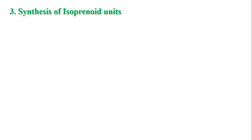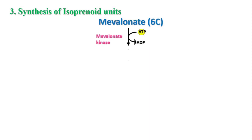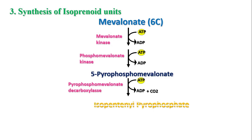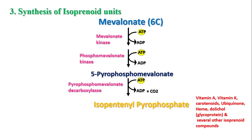Next is the synthesis of isoprene units. Mevalonate is phosphorylated by ATP and subsequently decarboxylated to form activated isoprene units — specifically isopentanyl pyrophosphate. Isoprene units are the building blocks of vitamin A, vitamin K, carotenoids, ubiquinone (used in the electron transport chain), dolichol, and several other isoprenoid compounds.